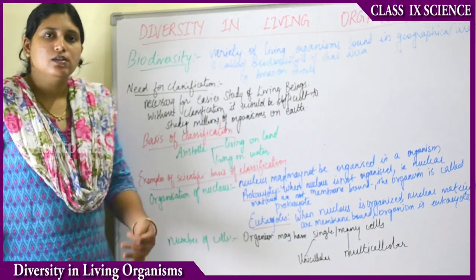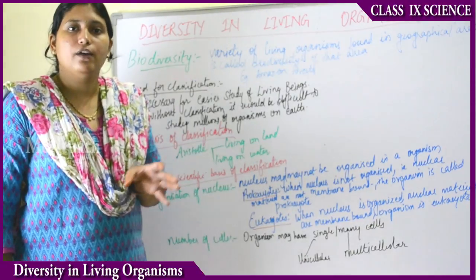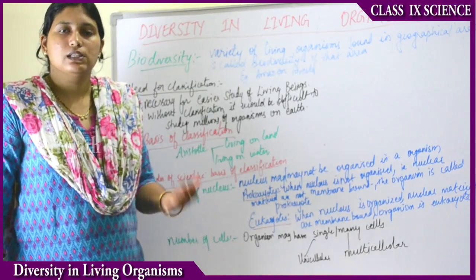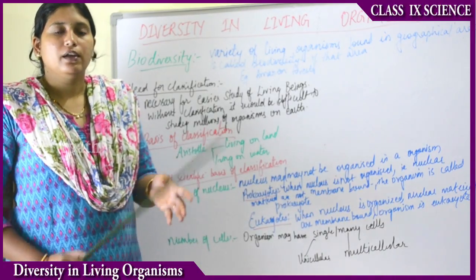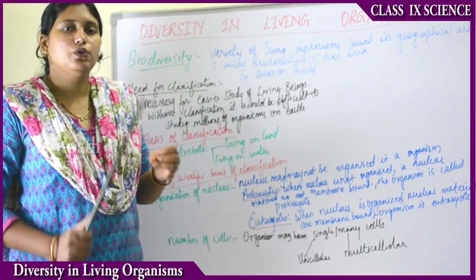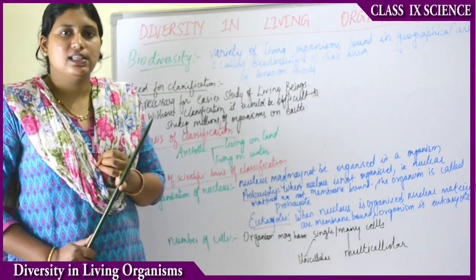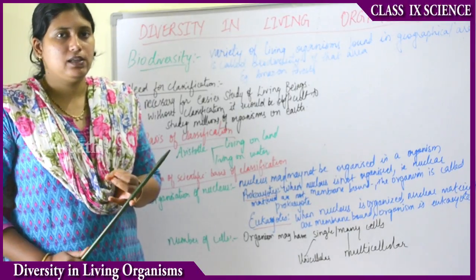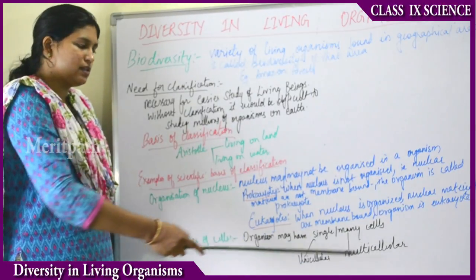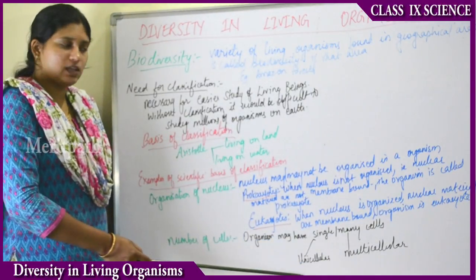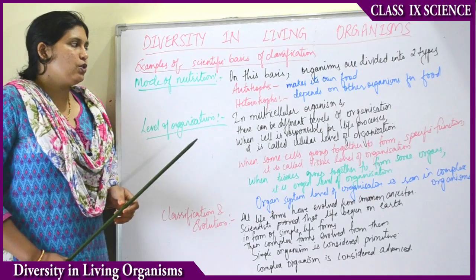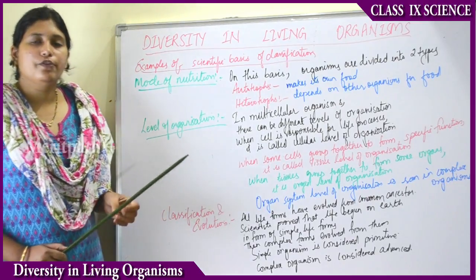Since the cell is known as the basic structural and functional unit of an organism, organisms were classified based on the number of cells into unicellular or multicellular. Unicellular means having a single cell; multicellular means having many cells. Organisms with single cells are unicellular, and organisms with many cells are multicellular.